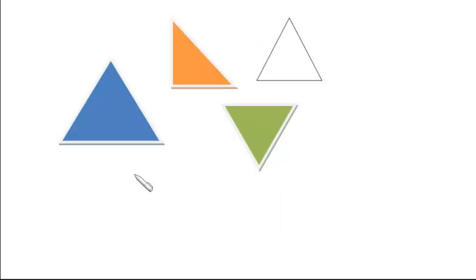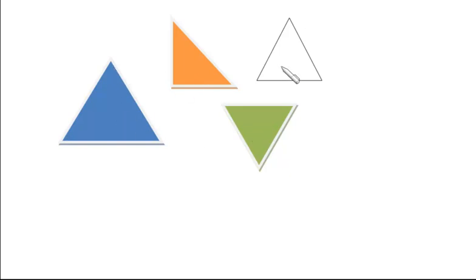Here we see different types of triangles. A triangle has three sides, three vertices, and it is a closed figure. These are called the sides of the triangle. A triangle is a closed figure which is made of three line segments.